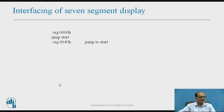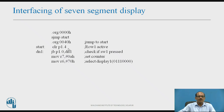Interfacing of 7-segment display programming: .ORG 0000H, SJMP ST, .ORG 0040H, jump to start as usual. Clear P1.4 — row 1 is active. Check if switch S1 is pressed: jump if bit P1.0. If S1 is pressed, move R7 immediate 0AH — set the counter for 10. Move R6, 70H — bit pattern required to select display 1 and output 0.